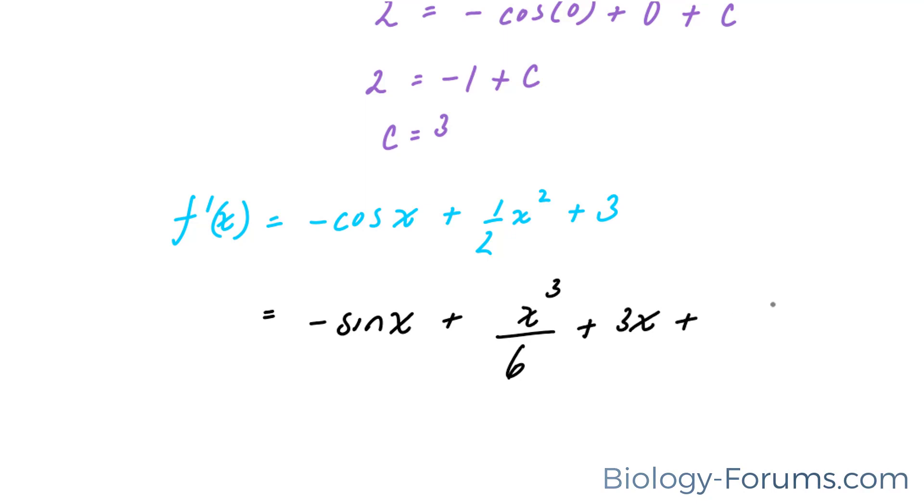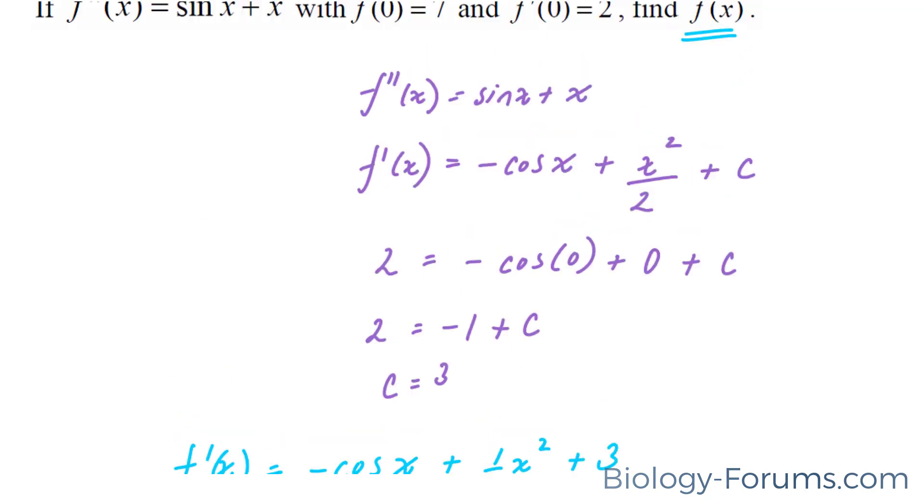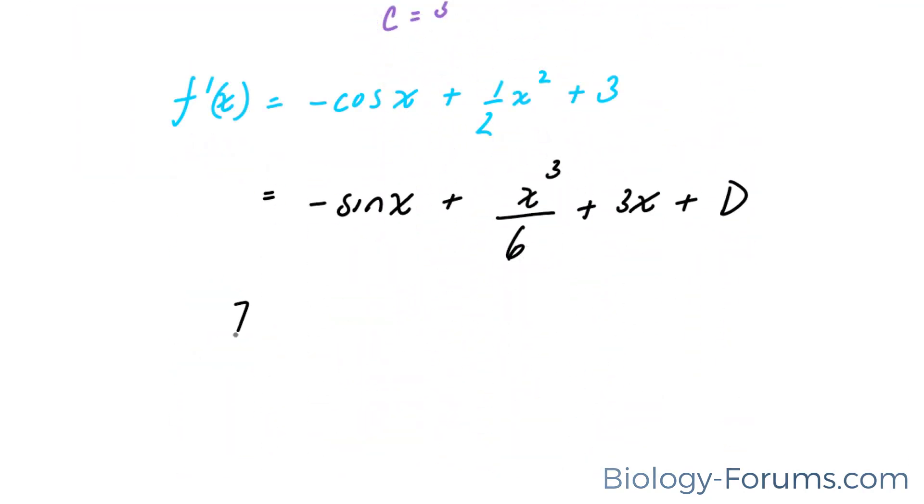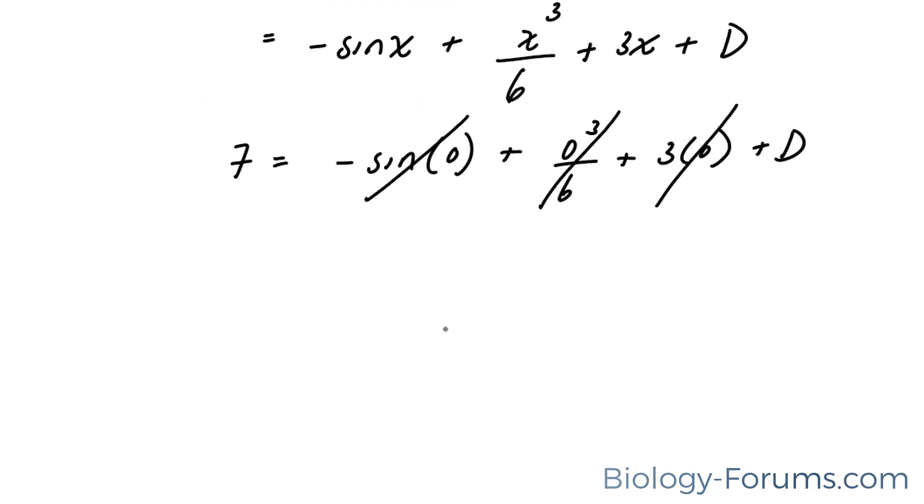Plus, we're going to add another arbitrary value, but this time we're going to call it d because we can't use c. We already used it. And we know that, according to the question, at 0, f is 7. So we're going to apply 0 into all of these x's to find our d. That goes to nothing. That goes to nothing. That goes to nothing. So therefore, our d value is 7.